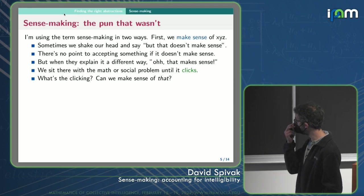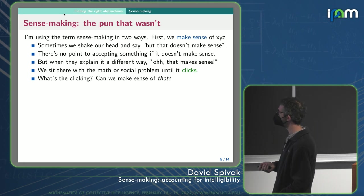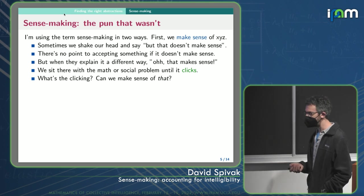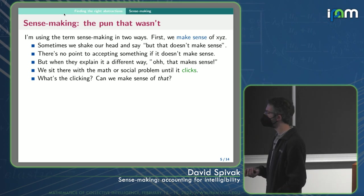So here's the first pun. I'm using this word in two ways. First, we make sense of x, y, z. So sometimes we shake our head and we say, no, that doesn't make sense. I'm not tracking that. It doesn't add up. And there's just no point to accepting something if it doesn't make sense.